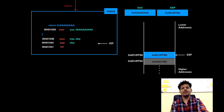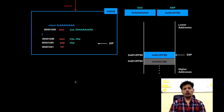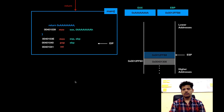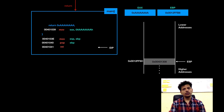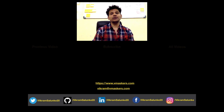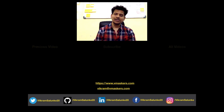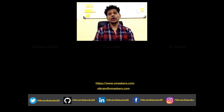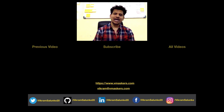Now we have to pop the value pointed by the esp onto the ebp to give back the function who called main its stack frame pointer. That got done. Now main is returning to the function who called it. For that we will take the address pointed by the esp and put that into the eip, and eip will begin execution from there. So that's it for this video. We saw how to use a stack for storing local variables. From the next video we will see how to pass an argument to another function with the help of a stack. Thank you!